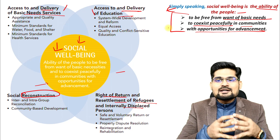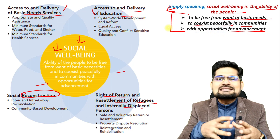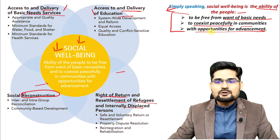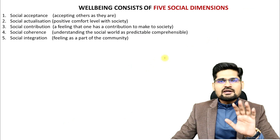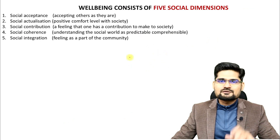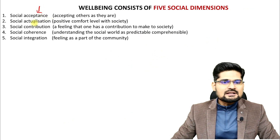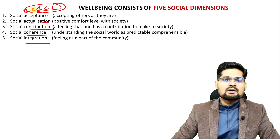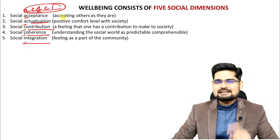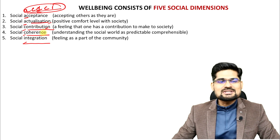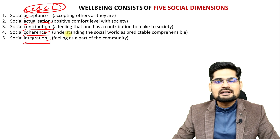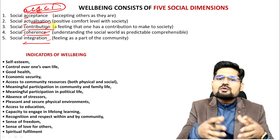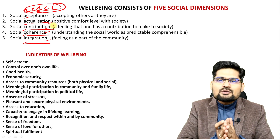There are five social dimensions of well-being: acceptance, actualization, contribution, coherence, and integration — remembered as the mnemonic AACCI. These factors are very important in terms of the social dimensions of well-being in people's lives. If you want to do research or work on social well-being, you need to know the indicators. How will you compute or understand it? Let's look at the set of indicators for well-being.